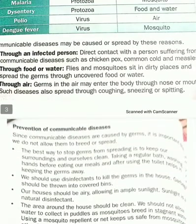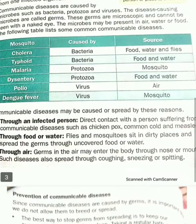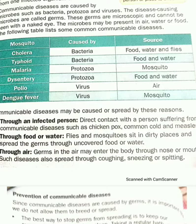Communicable diseases can spread through an infected person, through water, through food, through air-borne germs, and many more ways. For example, if we are using the clothes, utensils, or belongings of an infected person, then a healthy person can also suffer from this type of disease.